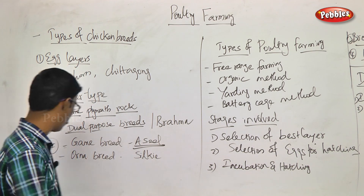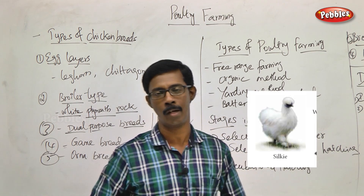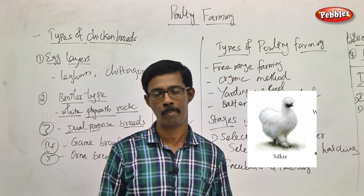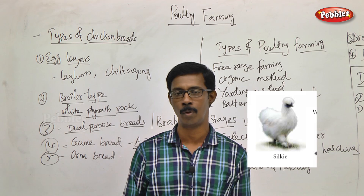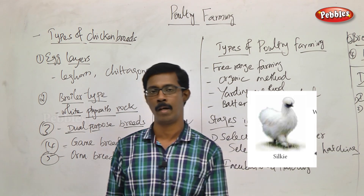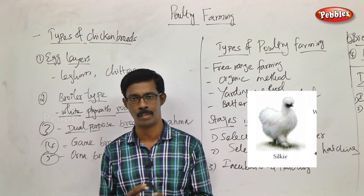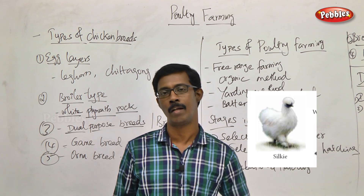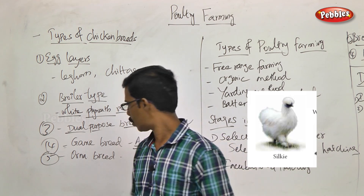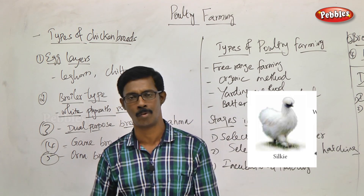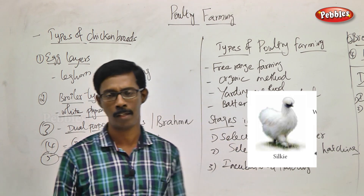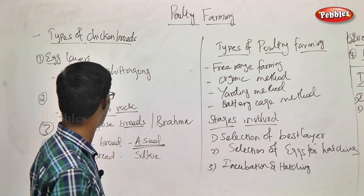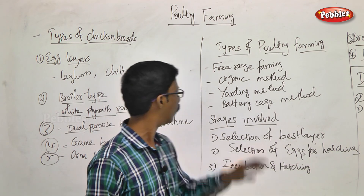The next type is the ornamental breed. The ornamental breed is kept for aesthetic appeal. In India, one very famous ornamental variety is the Silky breed, which has a very soft, silk-like hair appearance. These are the various types of chicken breeds in India.